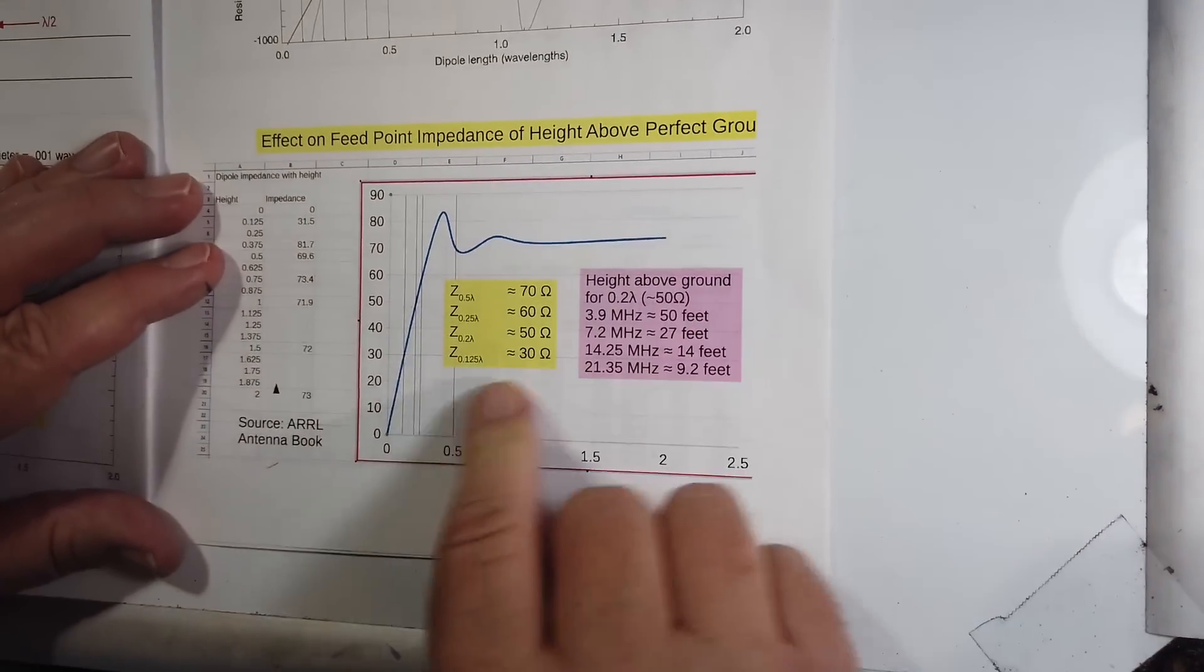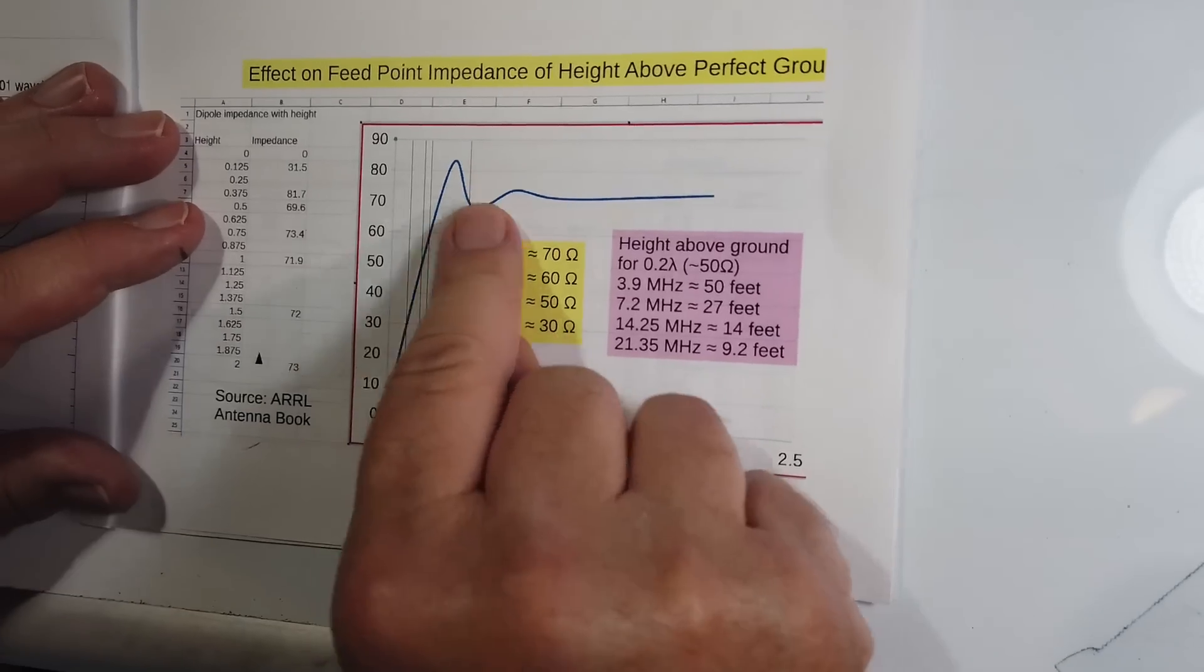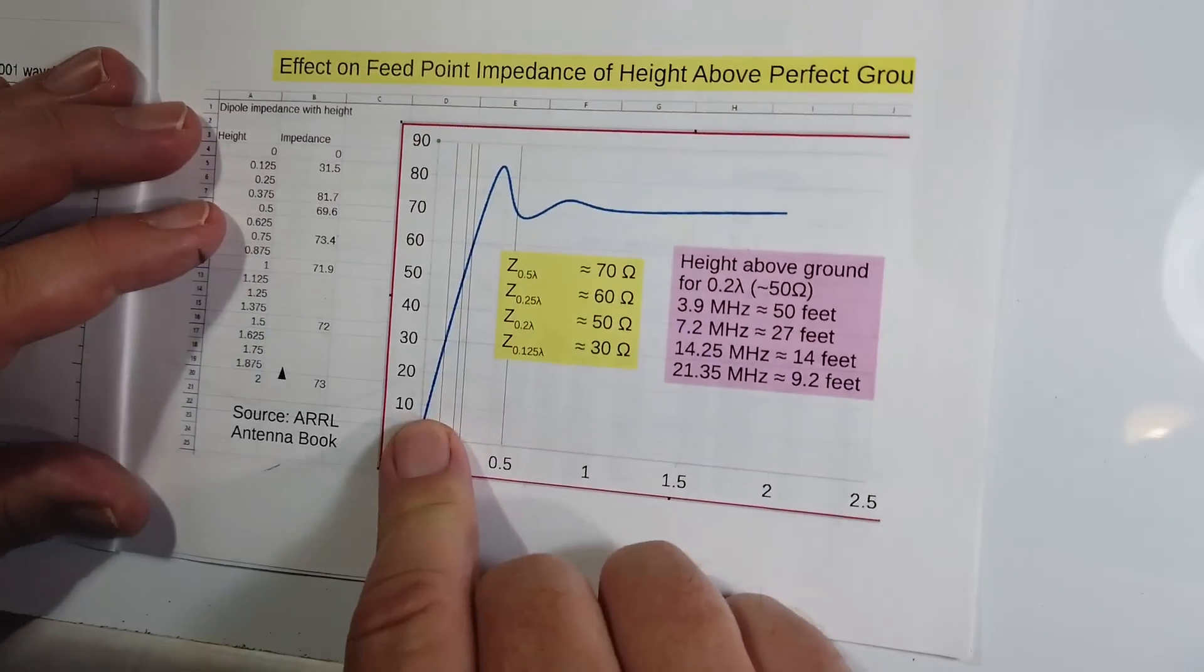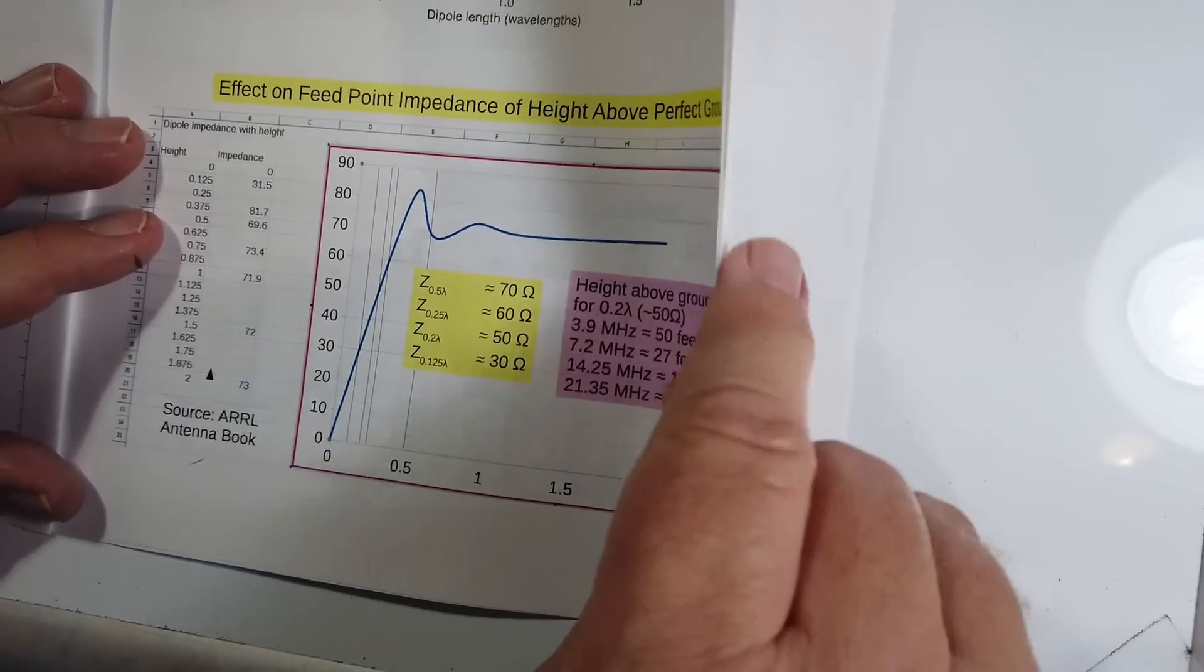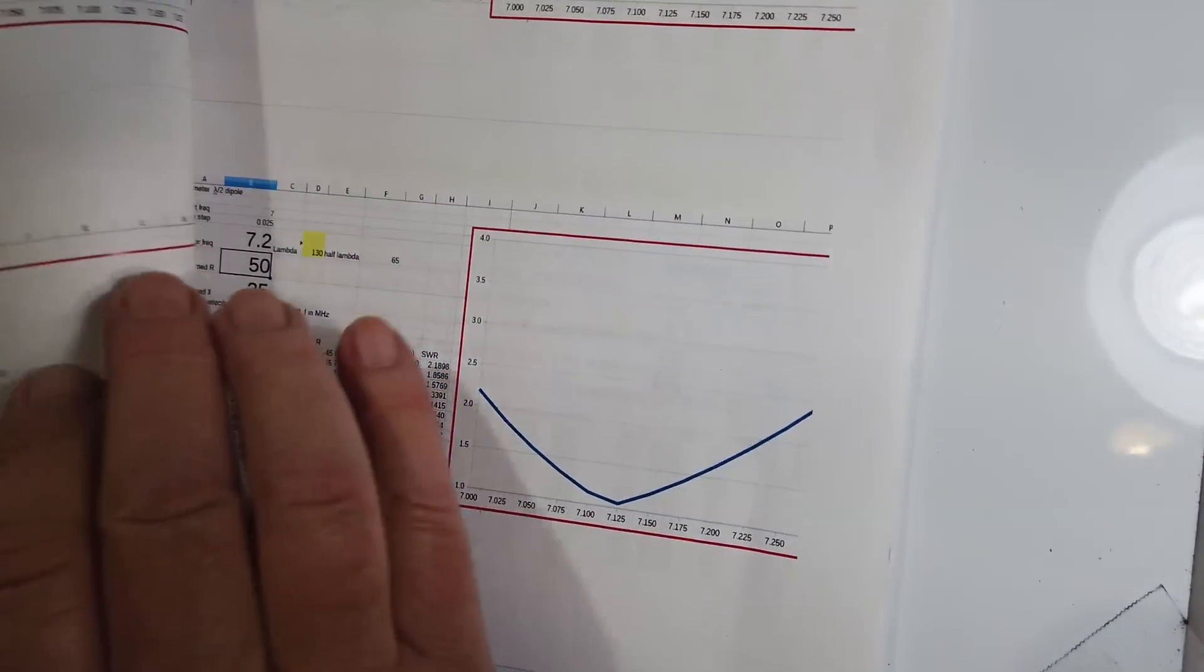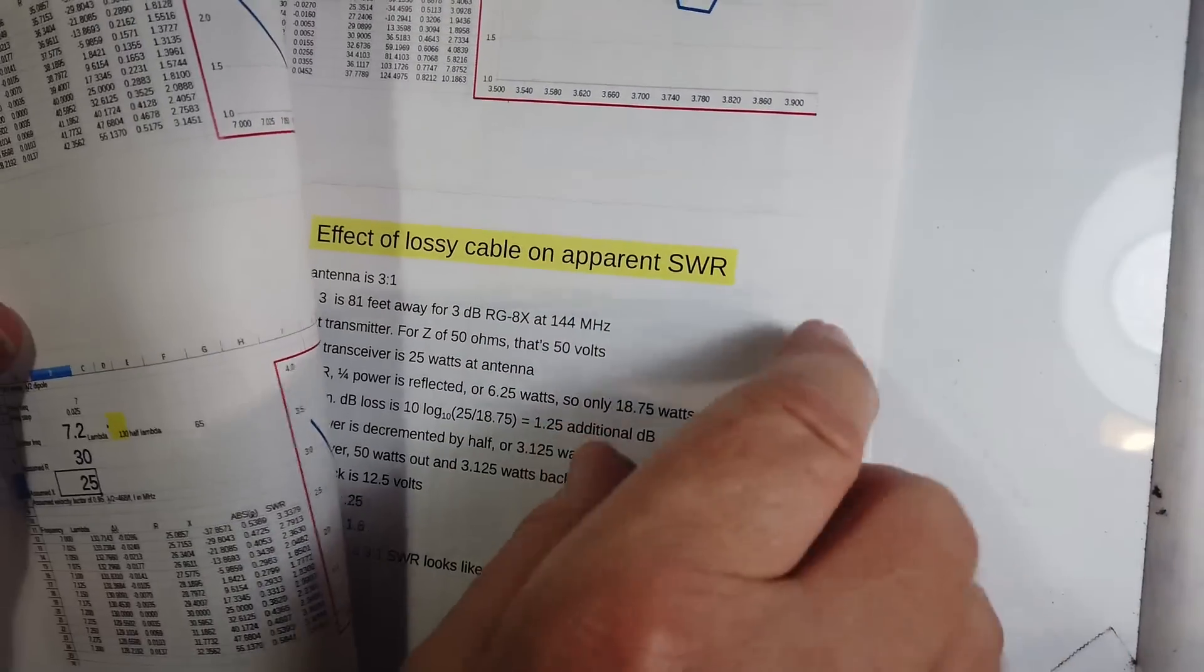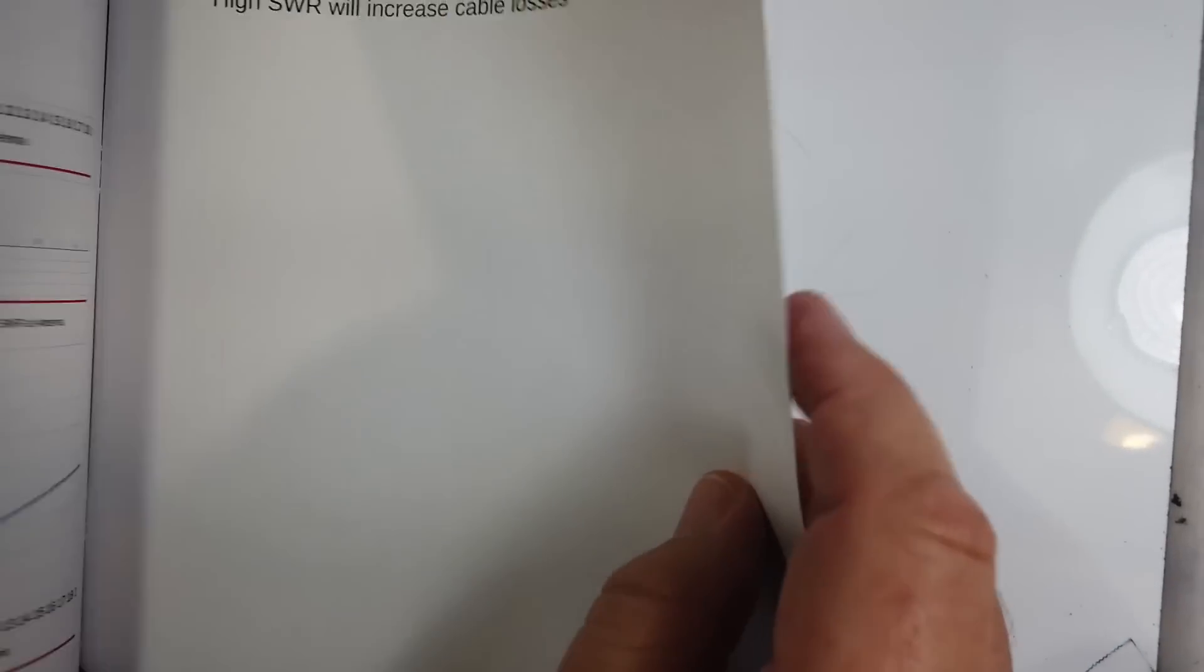I've done a lot of work in here. The height above the ground is going to change the feed point impedance of a relatively balanced dipole. They're a nicely done dipole. And I do quite a few more examples here to work this out.